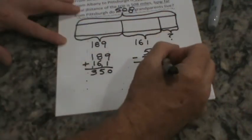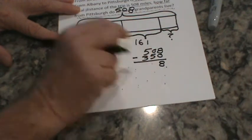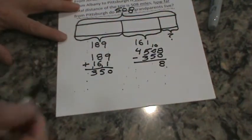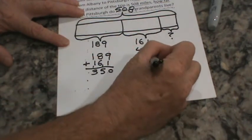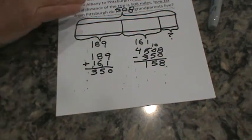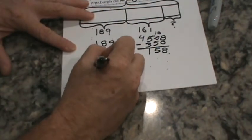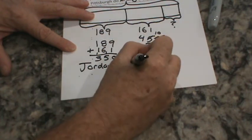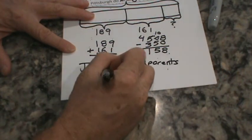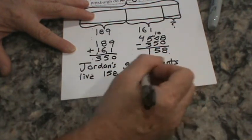And welcome back. 8 subtract 0 — 8 ones minus 0 ones remains 8. I can't take 5 tens away from 0 tens, so I'm going to say goodbye to 10 tens in the hundreds column and put them over here, because 10 tens is 100. 10 tens minus 5 tens is 5 tens. And 4 hundreds minus 300 — 4 minus 3 is 1. So it looks like it's 158 miles. Jordan's grandparents live 158 miles from Pittsburgh.